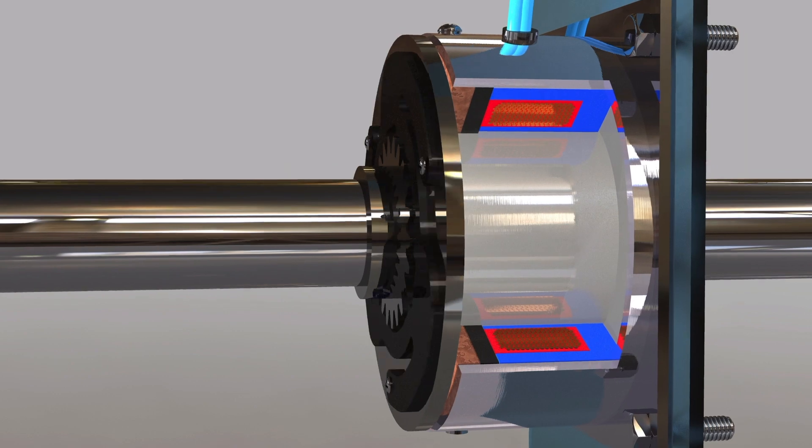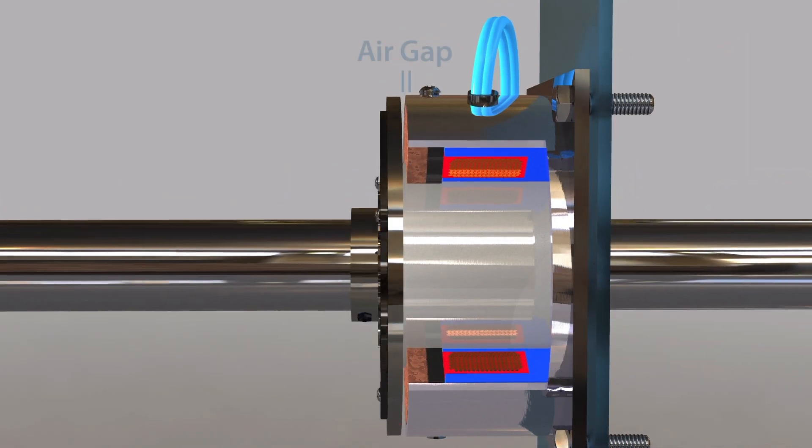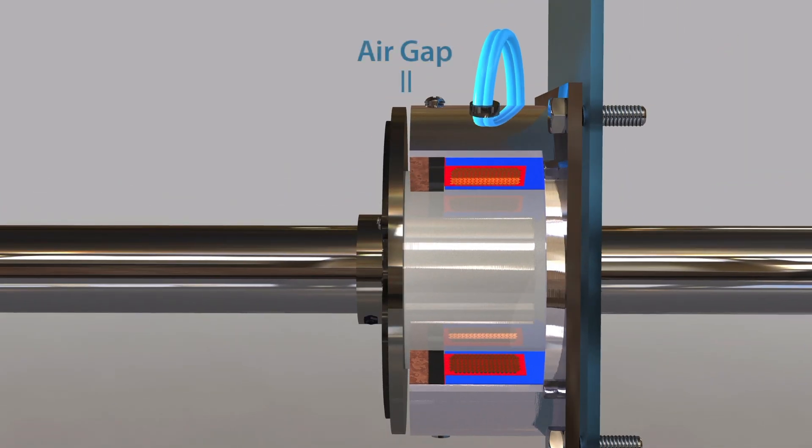When current or voltage is removed from the brake, springs hold the armature away from the hub surface, creating a small air gap.